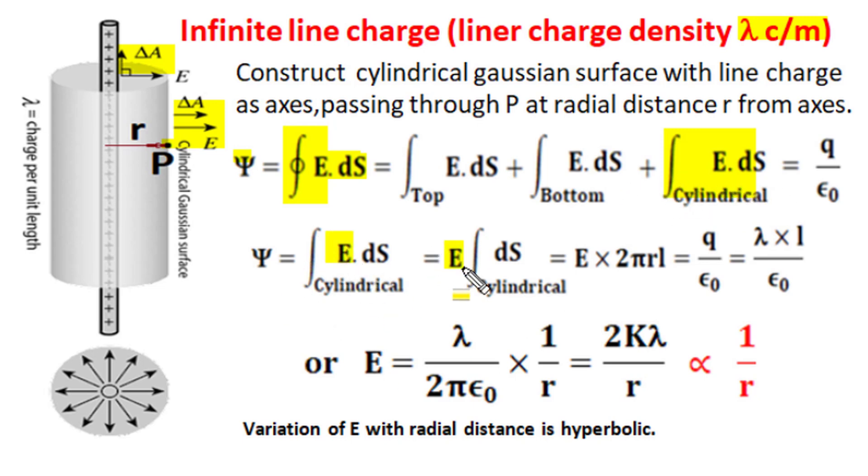So this E being constant can be brought out of integration and total cylindrical surface area with radial distance r from central axis got a circular periphery of 2πr and if length of this cylinder is l then the total cylindrical surface area is 2πrl.